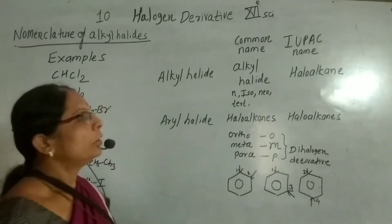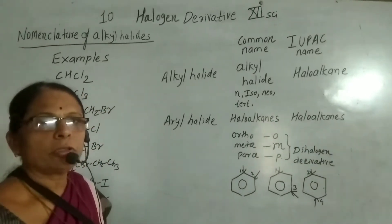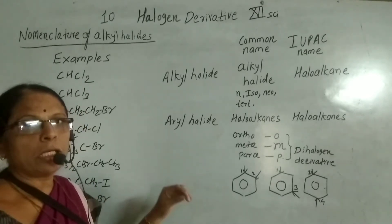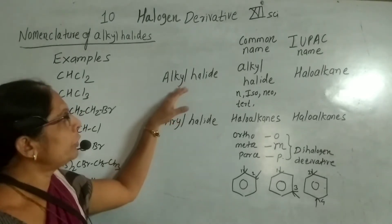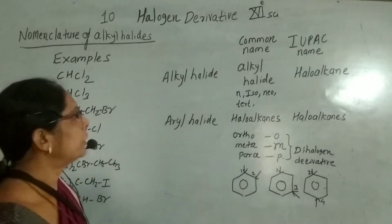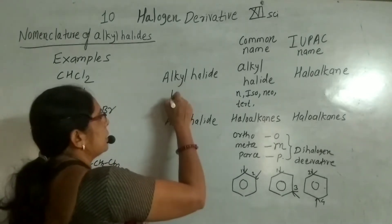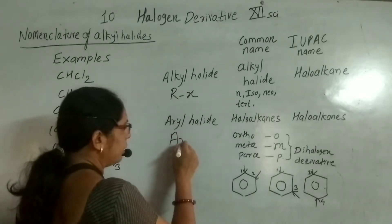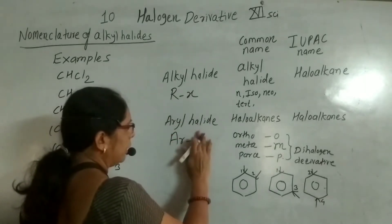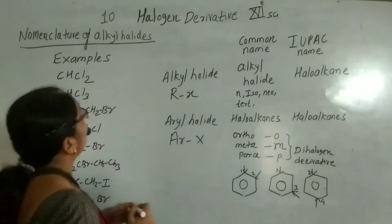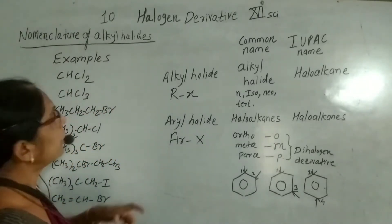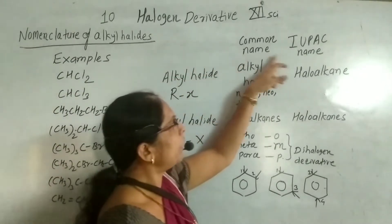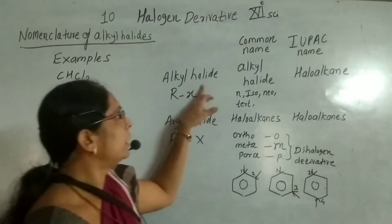Hello students. In this lecture we are discussing the nomenclature of alkyl halides, that is RX, and the nomenclature of aryl halides, that is ARX. When you consider the nomenclature of alkyl halides, first consider the common and IUPAC name of alkyl halides.